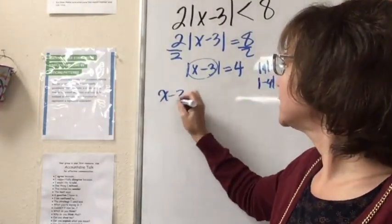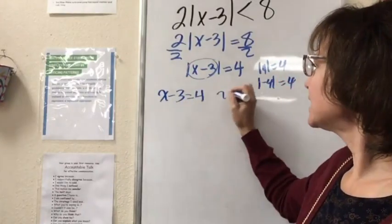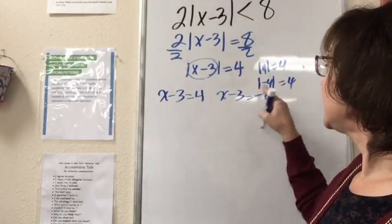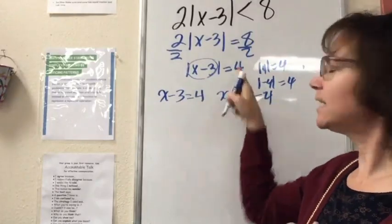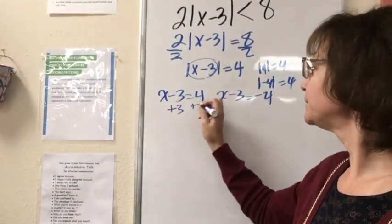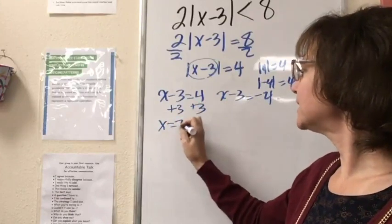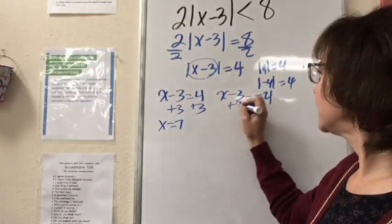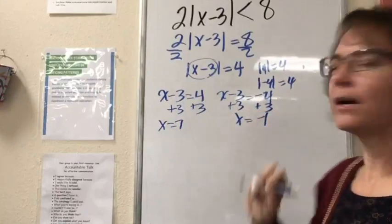So x minus 3 can equal 4, and x minus 3 can equal negative 4. In either case, that's going to give us a true equation. So then we can solve for x. x is equal to 7, and x is equal to negative 1.